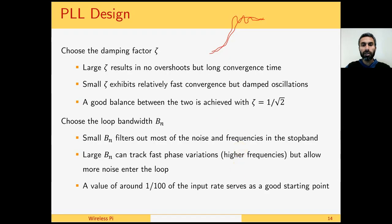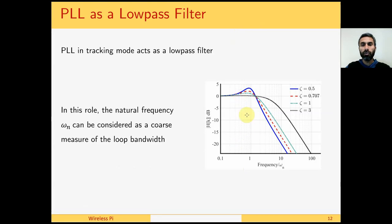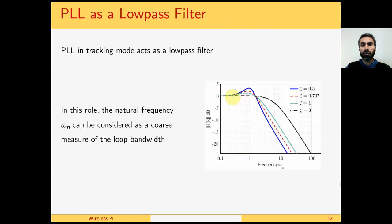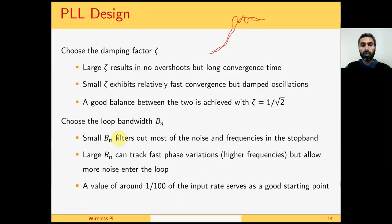As far as the loop bandwidth BN is concerned, a small BN filters out most of the noise and other spectral components. However, we should also keep in mind that any frequency or phase variations that go beyond that small bandwidth, then our PLL will be unable to track those changes. So it's a balance between filtering out the noise and the stopband frequencies, and the fast phase or frequency variations we are willing to track.